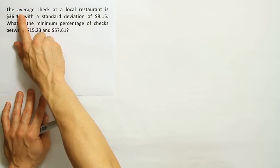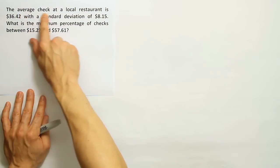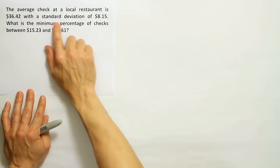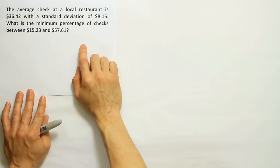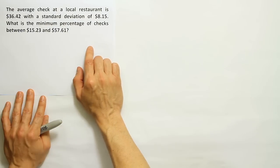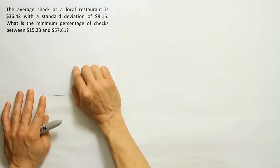Another bit of information here that's lacking is that it tells us the average check total and the standard deviation, but it doesn't go on to tell us anything more. Like for example, it doesn't say that it's bell-shaped in distribution or symmetric and mound-shaped. It doesn't indicate the shape of the distribution at all.